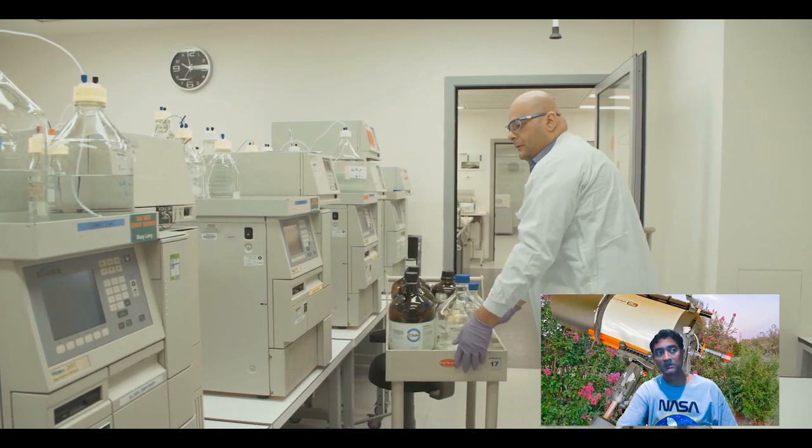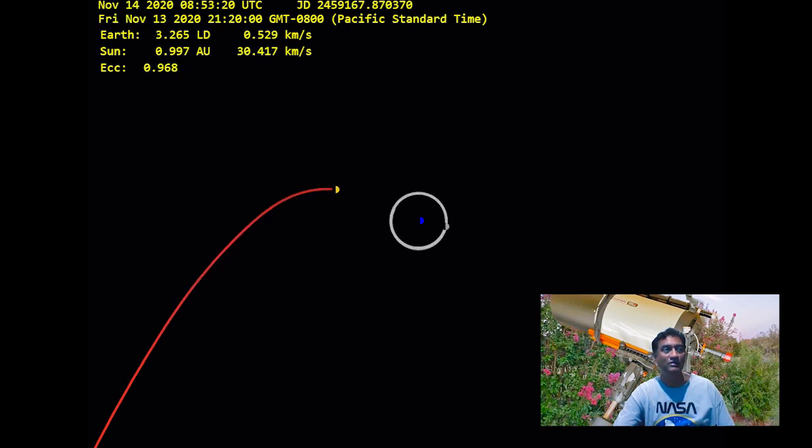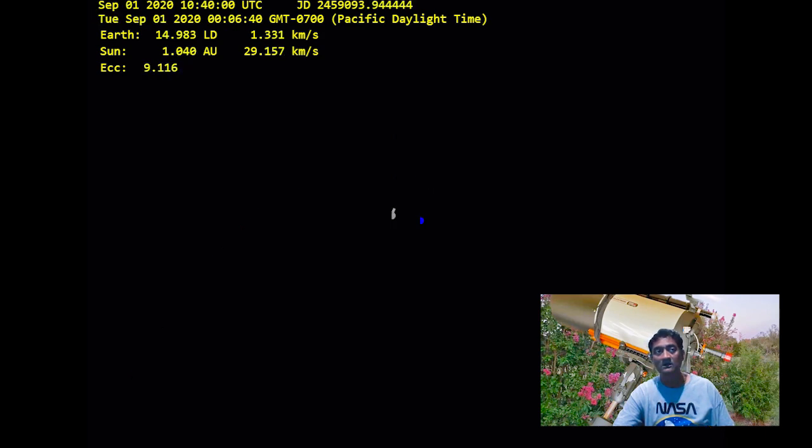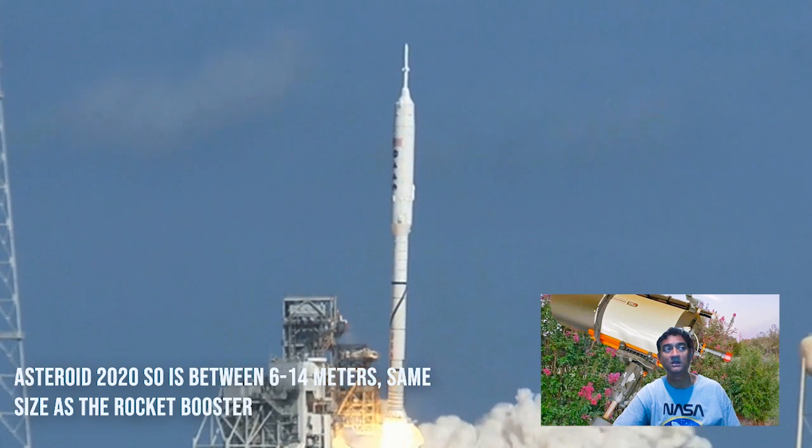Between September 2020 and June 2021, you will see this object entering into Earth's orbit, making a couple of rotations there and leaving the Earth. The object is between 6.4 and 14 meters.